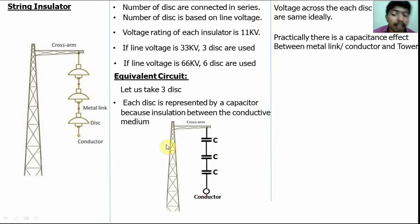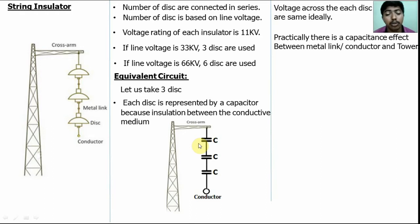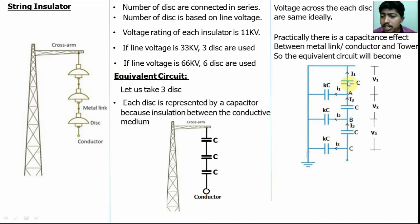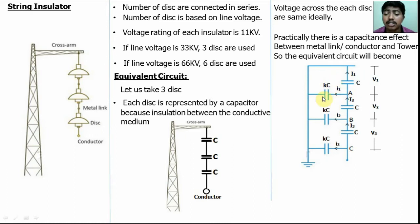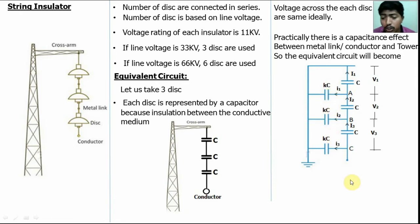Practically, there is a shunt capacitance effect between the metal link and the tower, because both are conductive mediums with insulation (air) between them — so it acts as a capacitor. This is the shunt capacitance effect. In the equivalent circuit, this capacitance is represented as K times C, where K is the fraction of the self-capacitance. This capacitance is called the shunt capacitance.